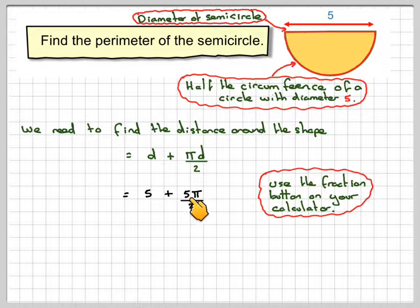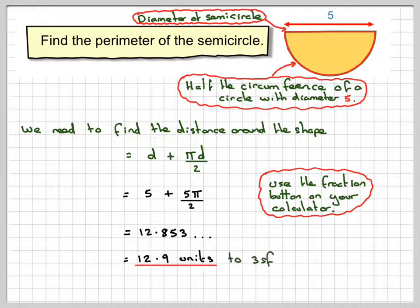We're going to get 12.853, so that's going to be 12.9 units to three significant figures because five will make that eight go to nine.